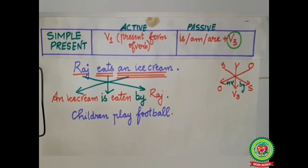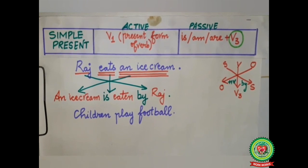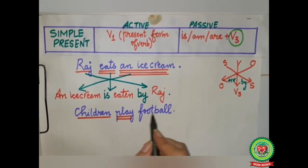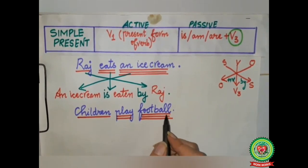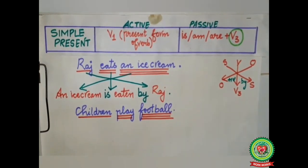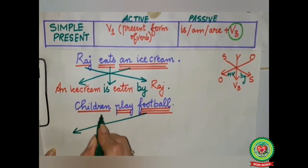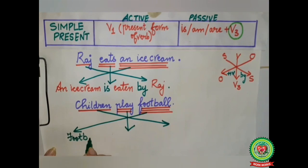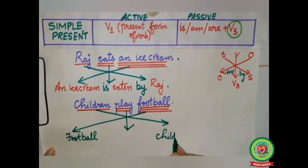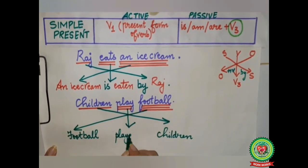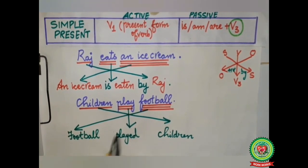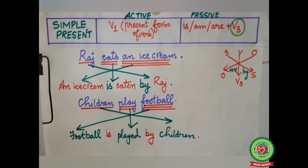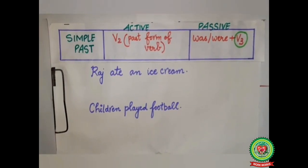Now we will do the second sentence. Who? Children — single underline. Action word 'play' — double underline. What? Football — triple underline. 'Children play football.' Football will come in the beginning, children will go to the last, and 'play' will change into its past participle 'played.' Football is singular so we will use helping verb 'is,' and before children we will add 'by.' The sentence becomes: 'Football is played by children.'